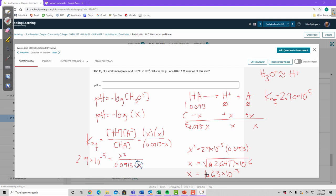Alright, so finally, now we know what X is. If we know what X is, we know what H plus is. If we know what H plus is, then we can plug it in over here and solve for pH. pH equals negative log of X. pH equals negative log of 1.63 times 10 to the minus 3rd, 2.79.